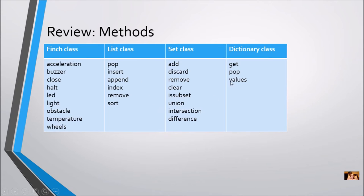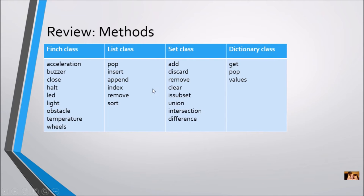Notice that some methods are the same across classes — for example, dictionary and list both have POP — but many are different. And even though they share method names, each class declared its own version. Whoever programmed each class came up with the methods for Finch, list, set, and dictionary, and those methods are encapsulated in their respective classes.